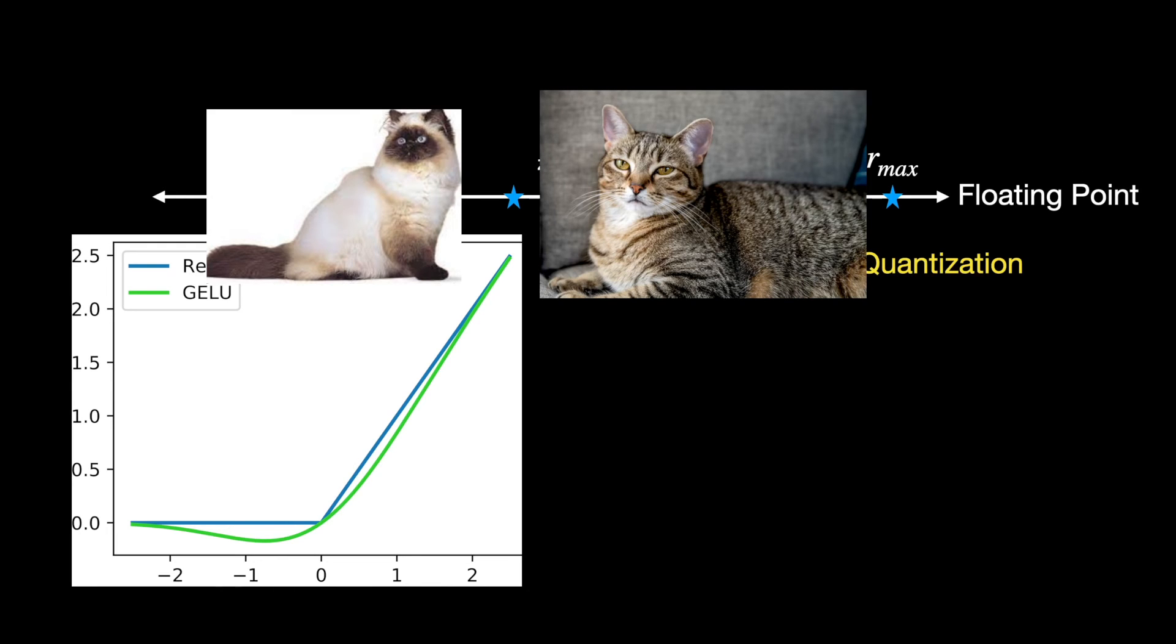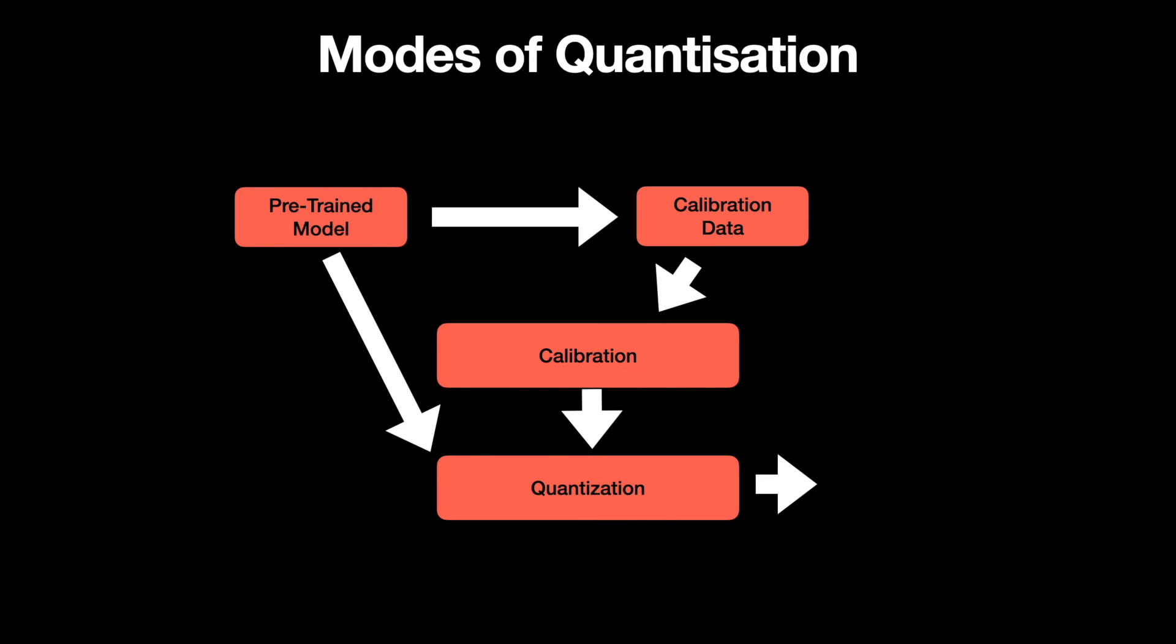So, the question now is, when do we calibrate the range for quantization? Is it during training? Or during inference as and when we get the input data for prediction? So, this question gives birth to different modes of quantization based on when we calibrate the range.